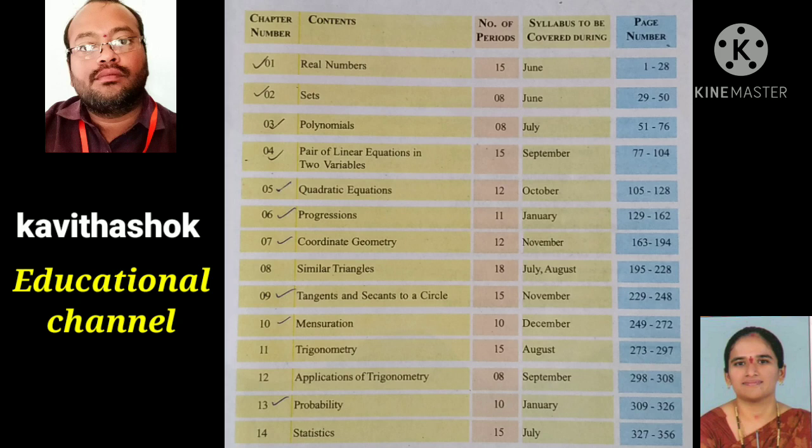The next topic is tangents and secants to circles. The ninth topic is the area of segment of a circle — it is minor or major. On page 242, you have the area of segment of a circle with minor and major segments. The first topic is activity based and project based.